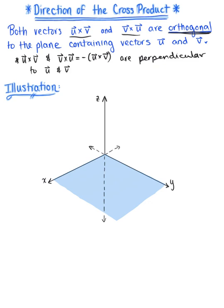An easy way to remember the orientation of vector u, vector v, and their cross product is to compare them to the familiar standard unit vectors in three dimensions. Consider a portion of the xy plane, shaded in blue — defined as z equals zero, extending infinitely in all directions. Here is the standard unit vector in the x direction, i hat, and here is the standard unit vector in the y direction, j hat.